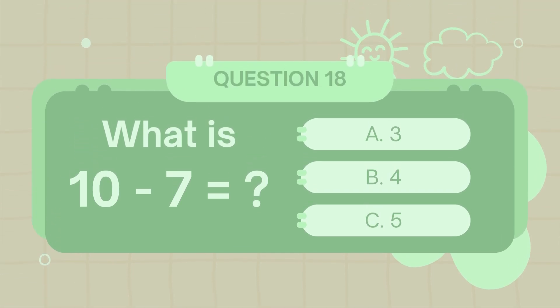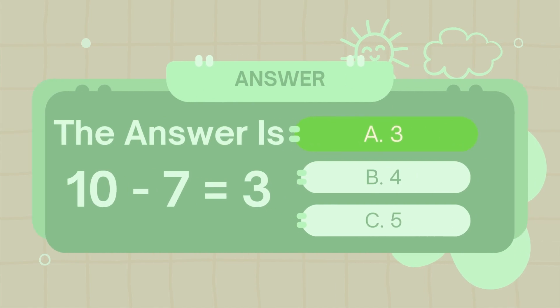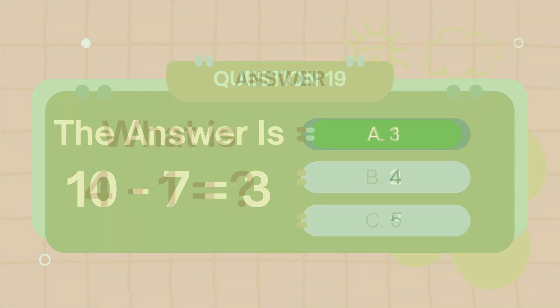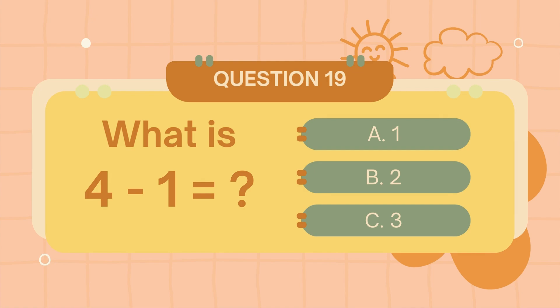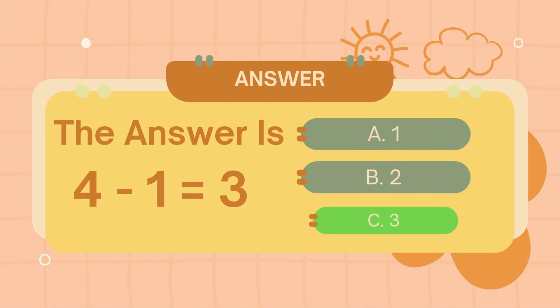What is 10 minus 7? The answer is 3. What is 4 minus 1? The answer is 3.